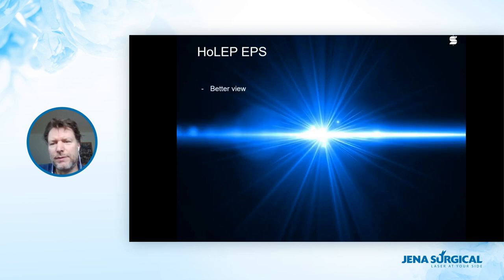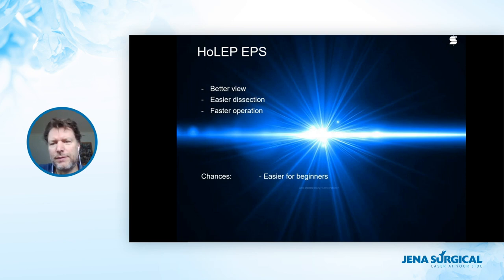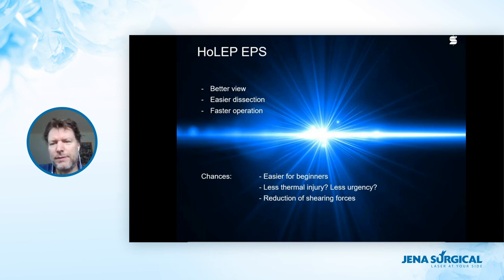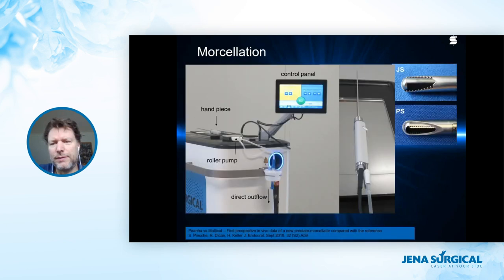HoLEP with EPS provides a better view and easier dissection, making it a faster operation. It is likely easier for beginners and causes less thermal injury because the mechanical airbag creates a safety distance from the laser fiber's thermal energy. There is probably less urgency postoperatively, though that is hard to prove in a study. Shearing forces are definitely reduced — other EEP surgeons shovel with the shaft for mechanical dissection, but with EPS you do not need to do that, reducing risk to the sphincter.